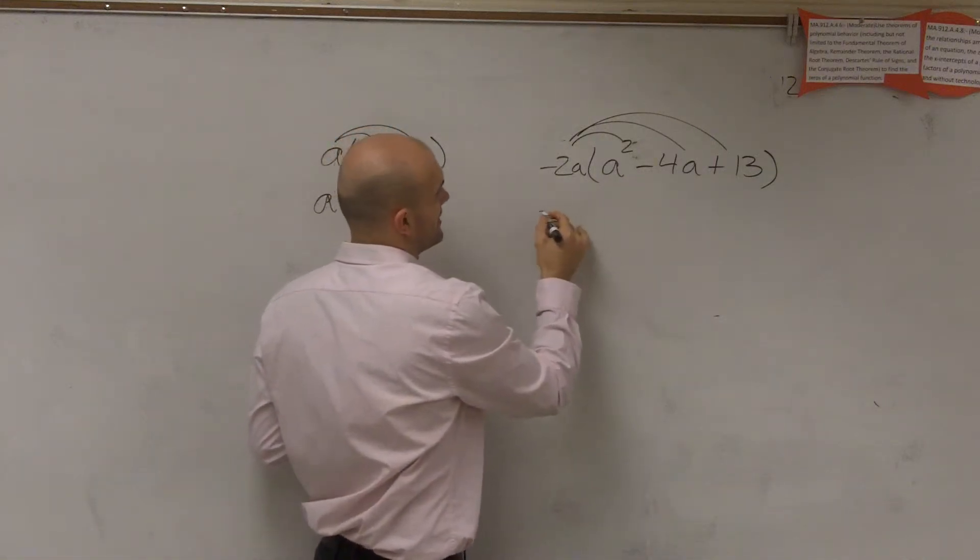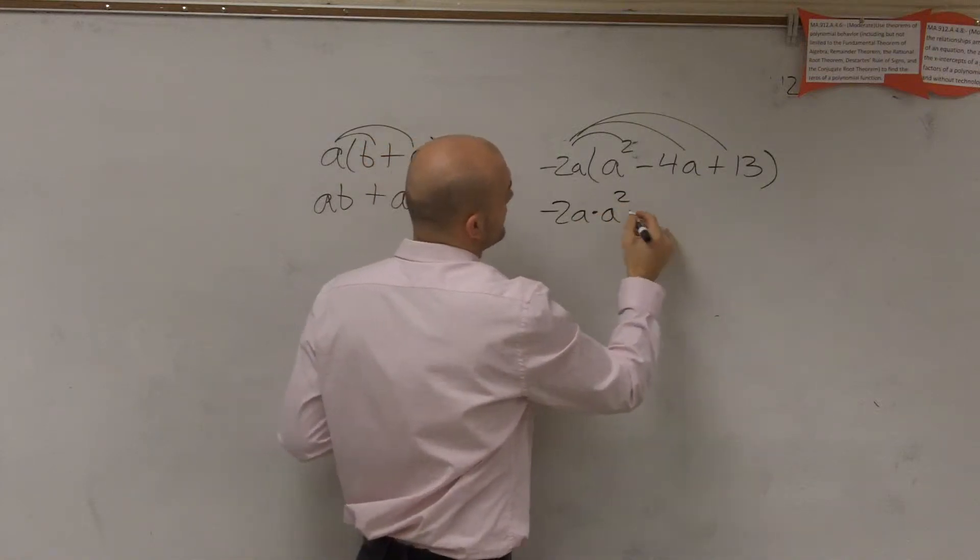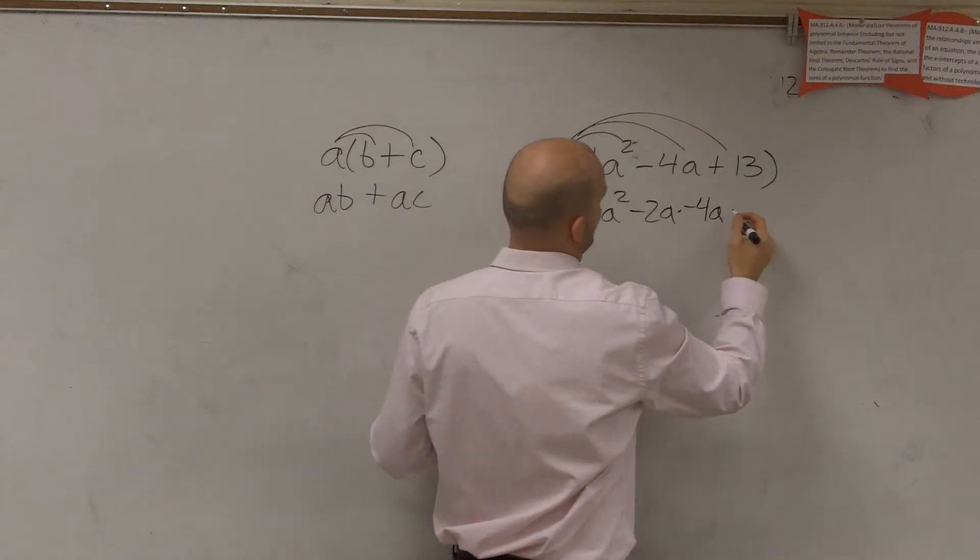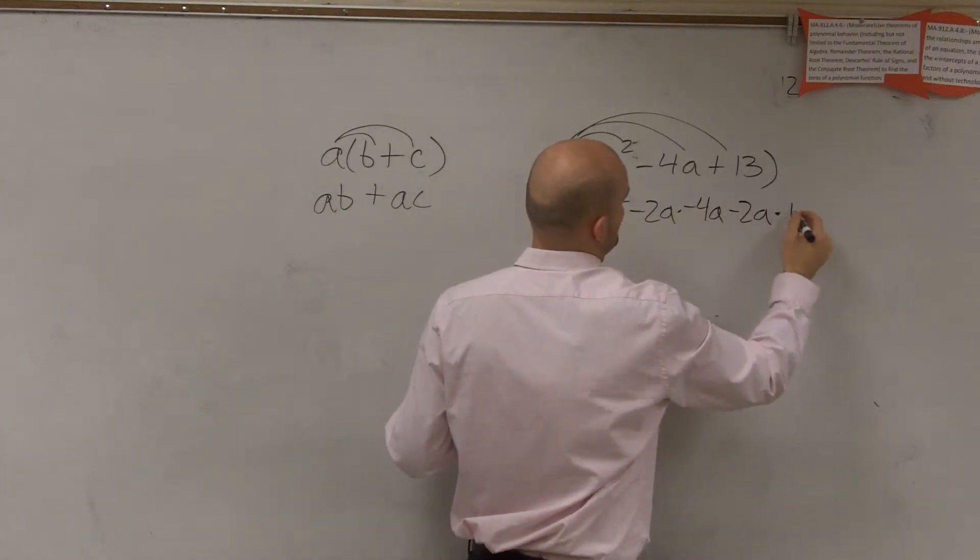Therefore, I have negative 2A times A squared, negative 2A times negative 4A, and then negative 2A times 13.